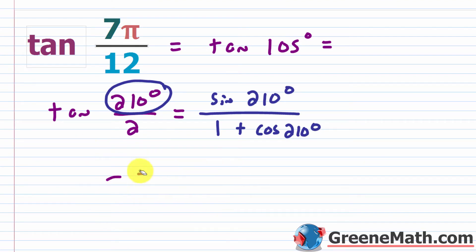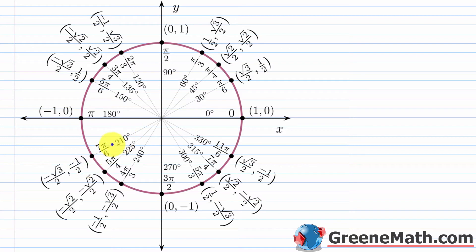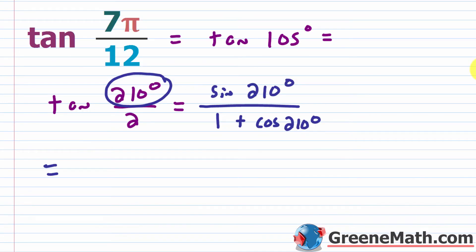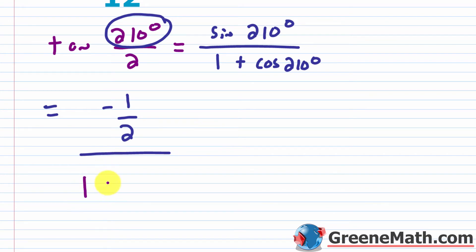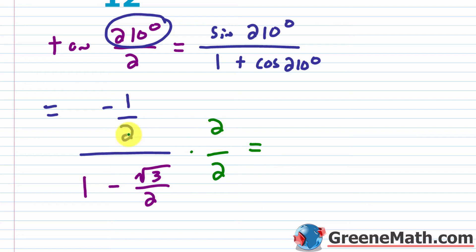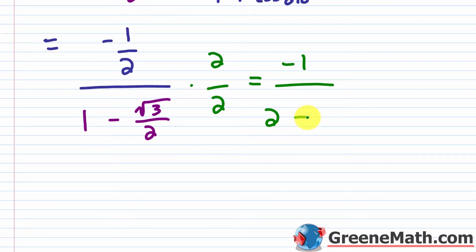From the unit circle, the sine of 210 degrees is negative 1/2, and the cosine of 210 degrees is negative square root of 3 over 2. Plugging in: we have negative 1/2 over 1 plus negative square root of 3 over 2, which gives us negative 1/2 over 1 minus square root of 3 over 2. Multiplying the top and bottom by 2: the 2's cancel on top to give negative 1, and on the bottom 2 times 1 is 2 minus square root of 3.